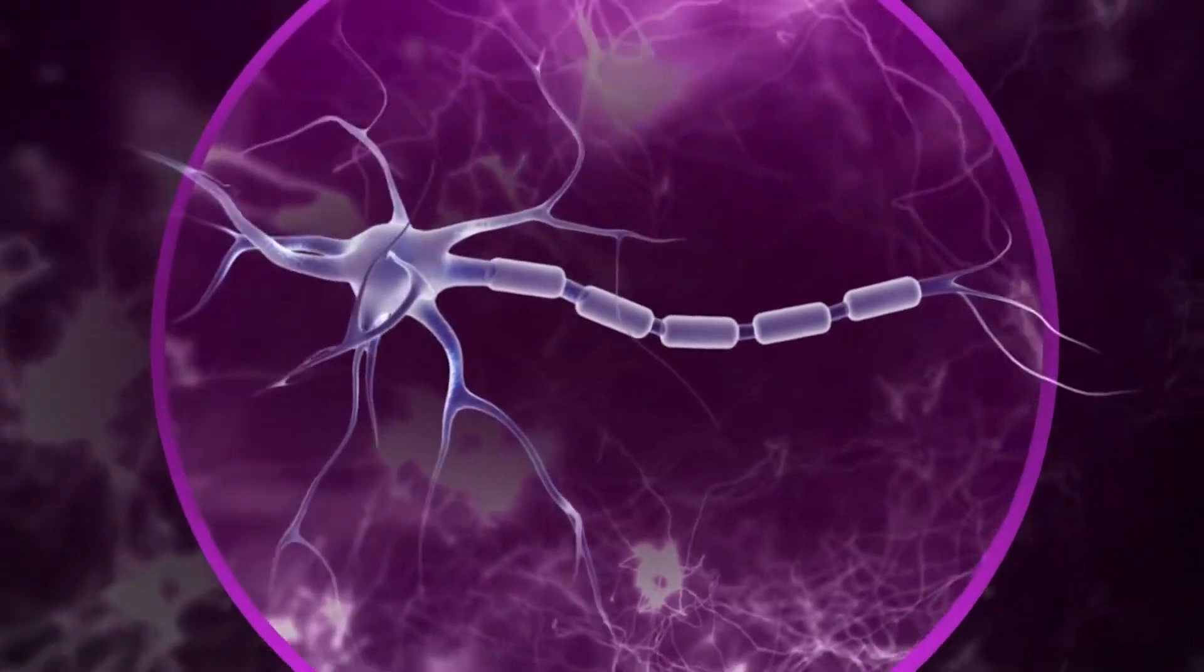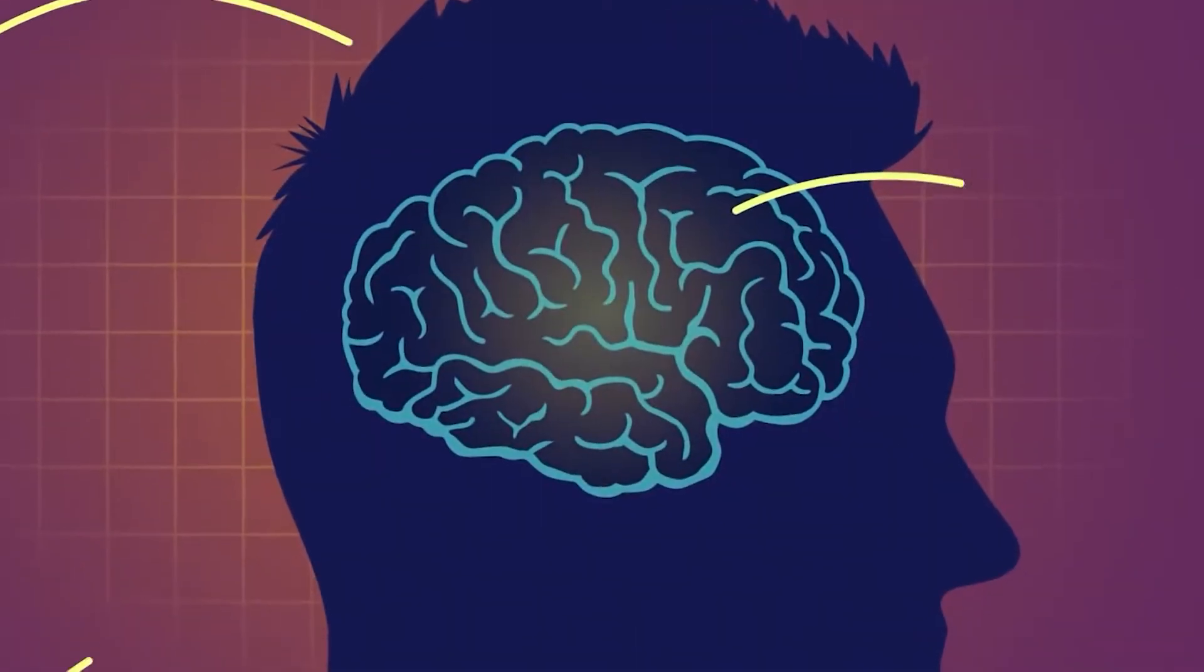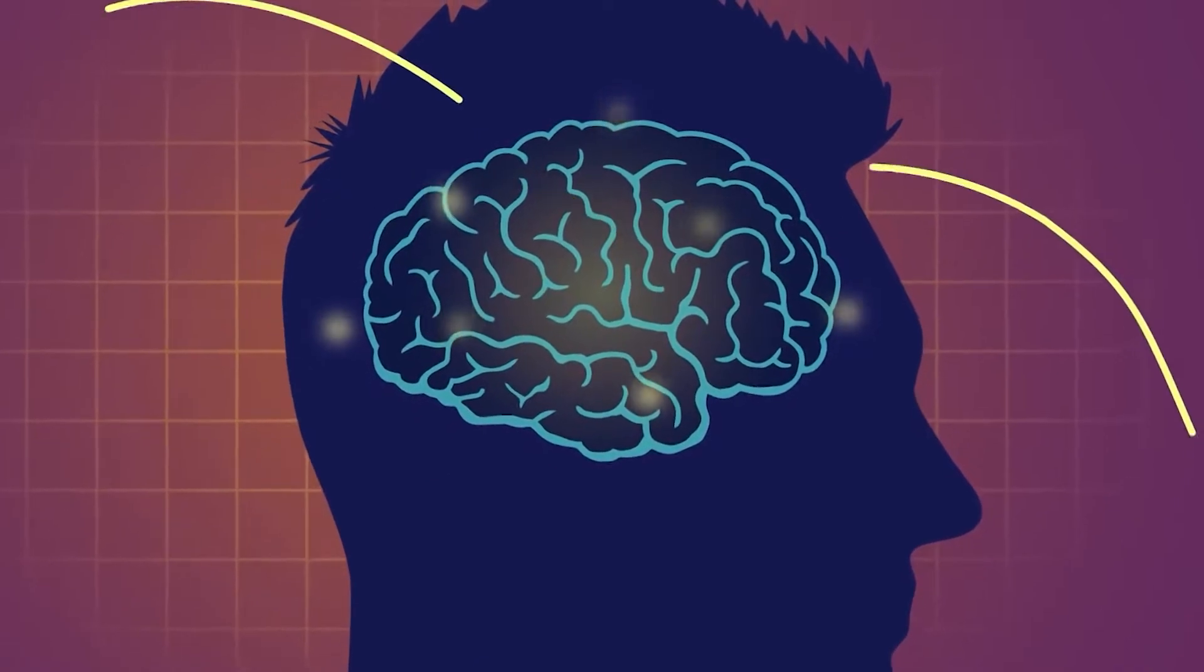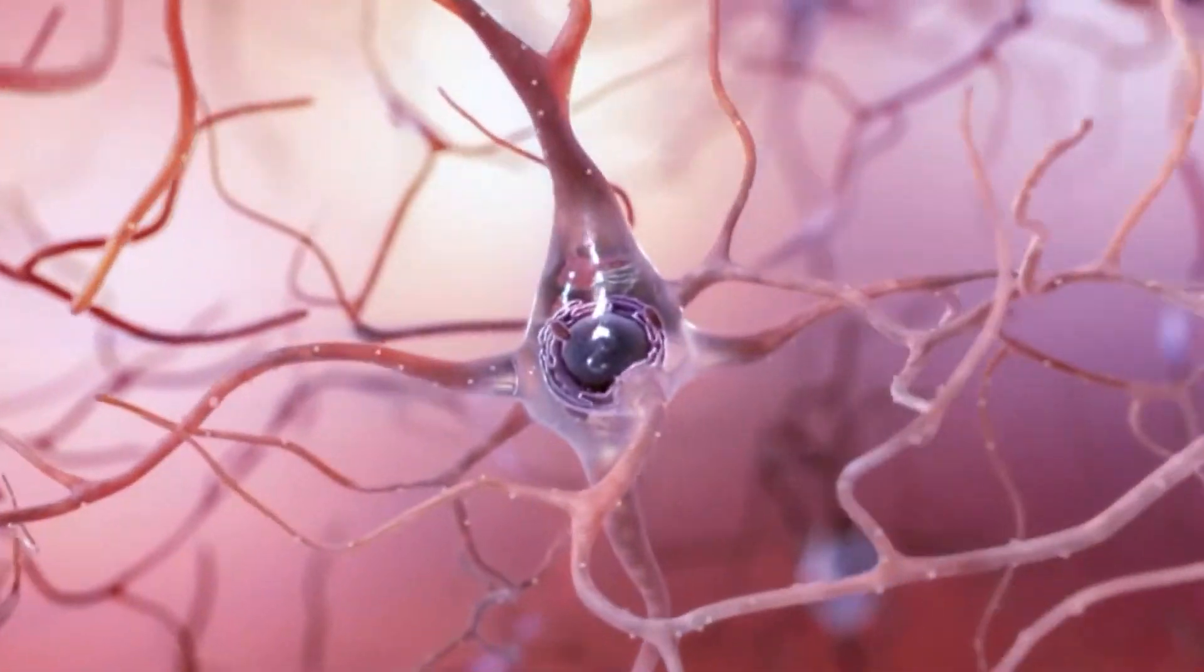The primary function of this system is to alarm the higher brain centers when some important news arrives and to filter out unnecessary incoming messages. If this system gets destroyed, an enduring and profound coma results.